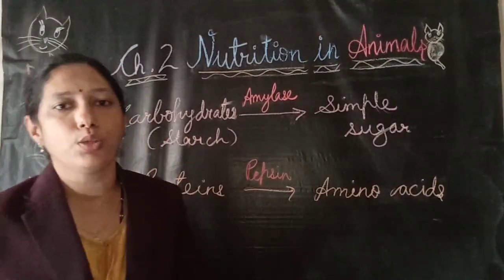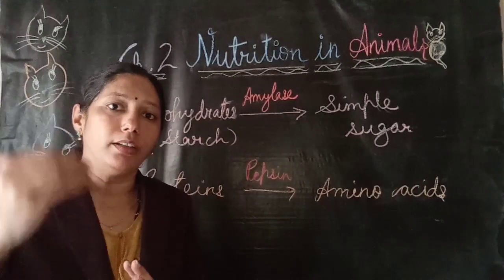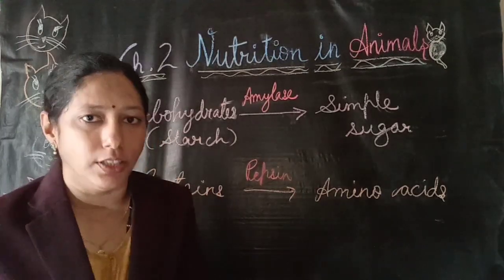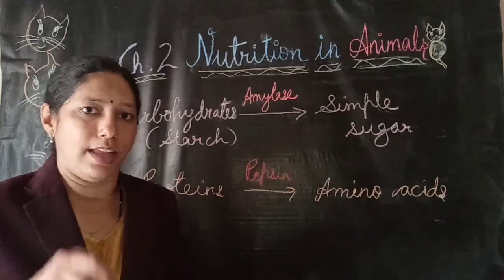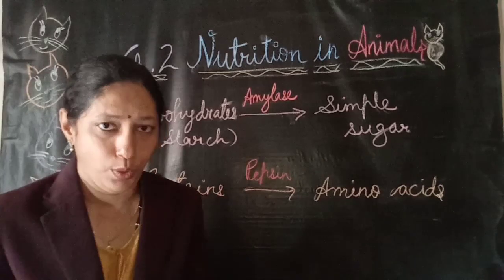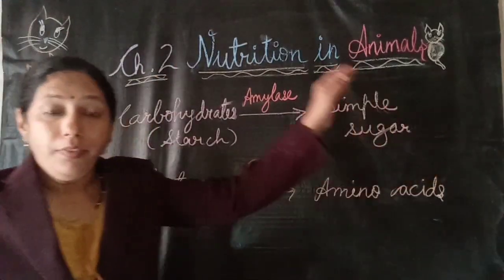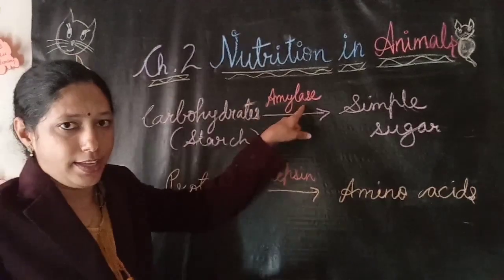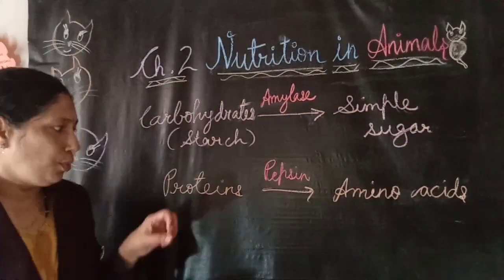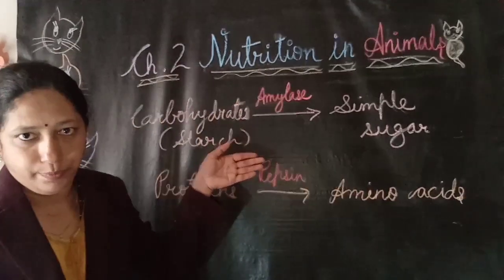Mechanical digestion also occurs in the stomach — the stomach muscles churn the food and mix it with mucus, hydrochloric acid, and digestive juices. So both mechanical and chemical digestion occur in the stomach. To recap: saliva in the buccal cavity contains the enzyme amylase, which converts carbohydrates into simple sugar. In the stomach, the enzyme pepsin converts proteins into amino acids.